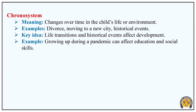Lastly, the Chrono System means changes over time in the child's life and environment. Examples include divorce, moving to a new city, and historical events. The key idea is that life transitions and historical events affect development. For example, growing up during a pandemic can affect education and social skills. If parents divorce, it can affect the child's learning and social skills.